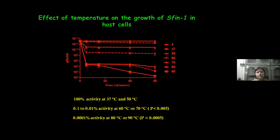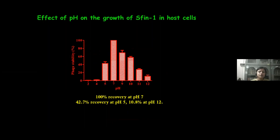Regarding the effect of temperature on SF-1 growth, 100% activity was shown at 37°C and 50°C. Activity slowly decreased from 60°C but some activity remains even at 90°C. For the effect of pH, 100% recovery was observed at pH 7, but some activity remains at pH 5 and pH 12. These results conclude that phage SF-1 is thermostable and has wide pH tolerance.